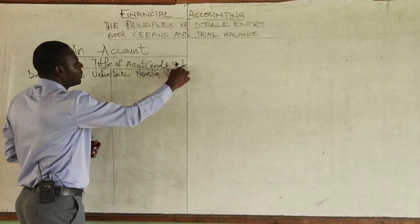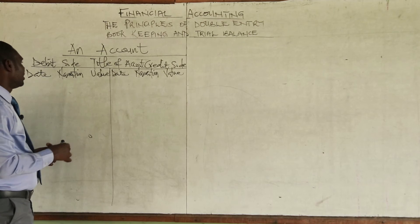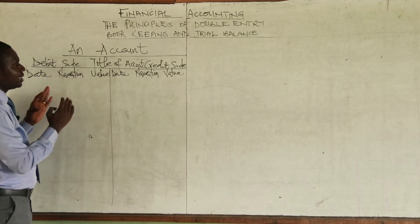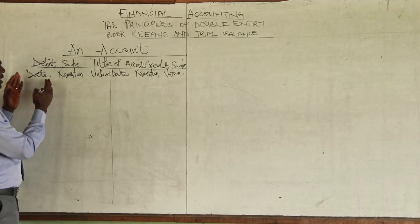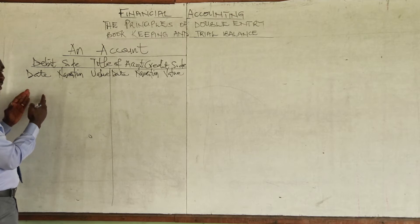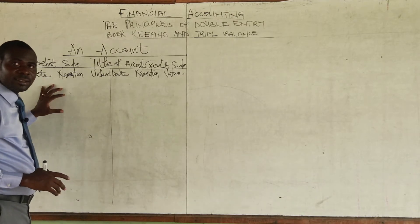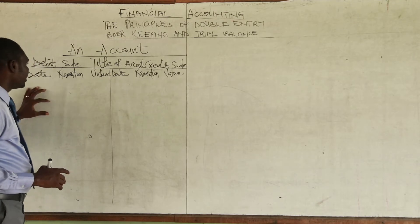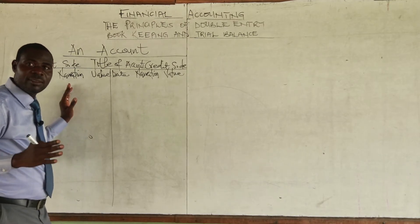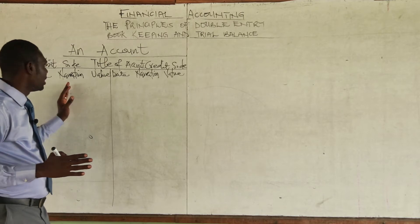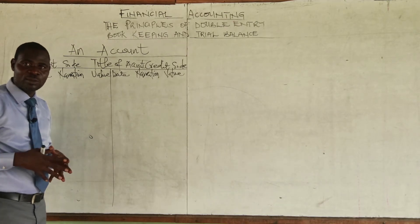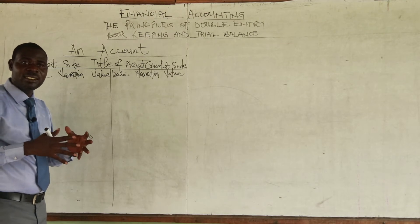On both the debit and credit sides, we record the date, the narration, and the value. The date refers to when the transaction occurred. The narration relates to the double entry principle, which states that we debit one account and credit another — recording is done twice.